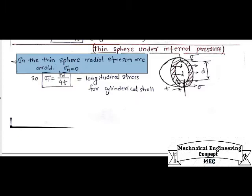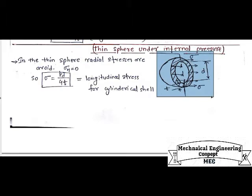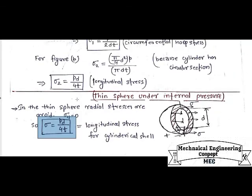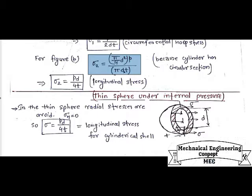The hoop stress or circumferential stress is also induced in the sphere due to internal pressure. In any section of the sphere, whenever we cut from anywhere in the sphere, the stress comes out as: stress equals pressure into diameter divided by 4t, which is equal to the longitudinal stress of the cylindrical shell, which I have already derived for cylinder under pressure, in which the resisting area will be pi·d·t (circumference into thickness) and the force section will be pi/4·d²·pressure. So the longitudinal stress will be equal to pd/4t for thin sphere under internal pressure.